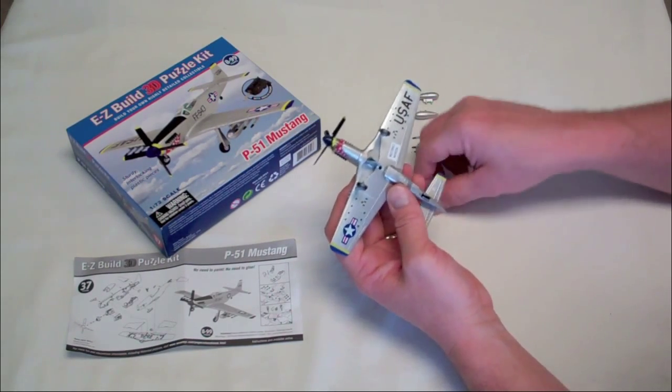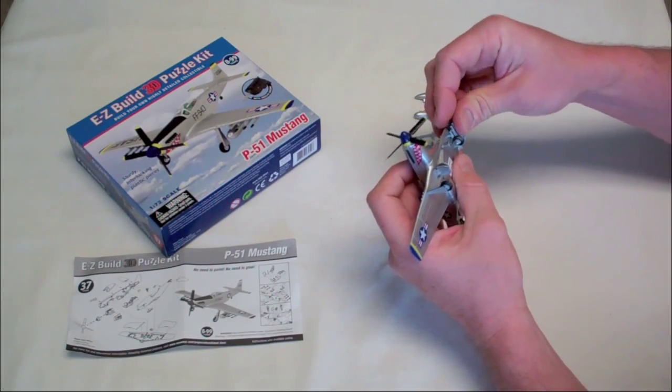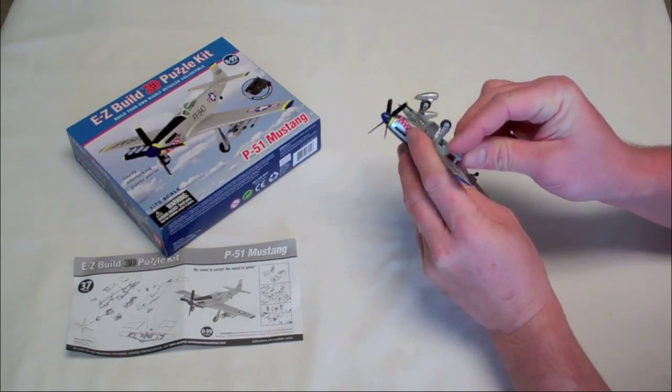The P51 carried six .50 caliber Browning machine guns in the wings, two 500-pound bombs, or eight 75-millimeter rockets in place of long-range drop tanks.